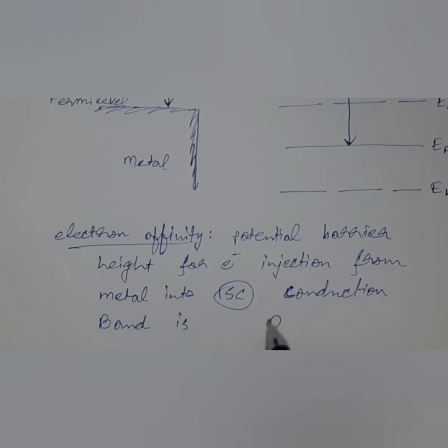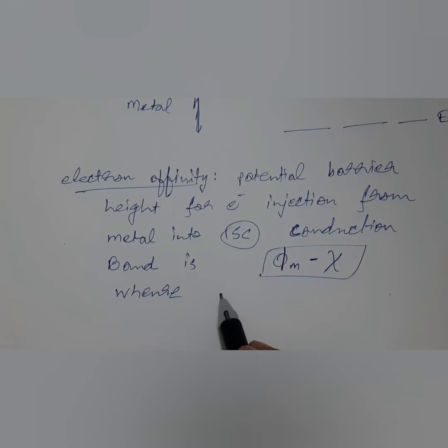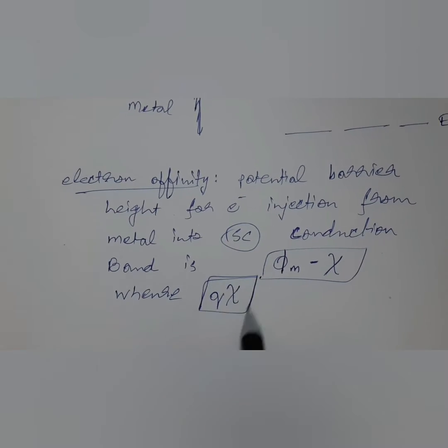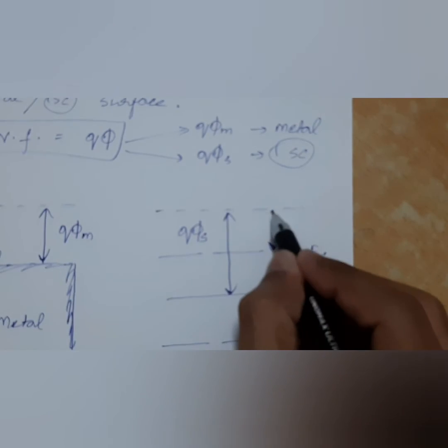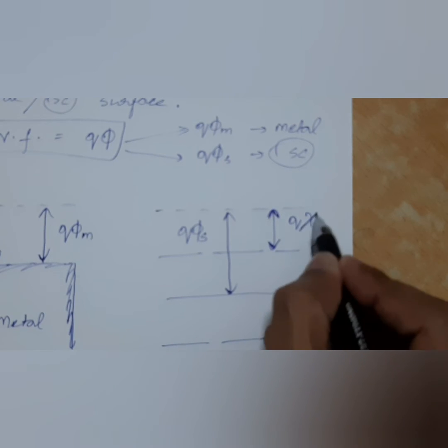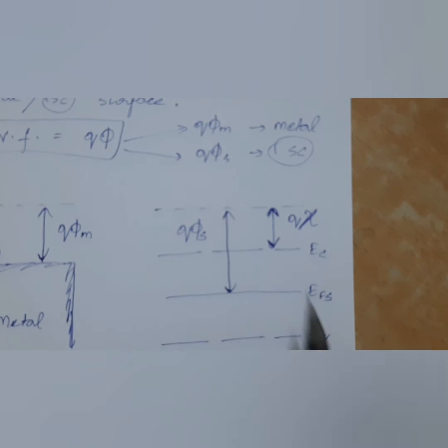While some of you may prefer to call it chi, pardon me if I am pronouncing it wrong. So in short, the electron affinity is given by q xi. In the energy band diagram, electron affinity is represented like this.